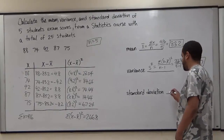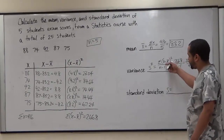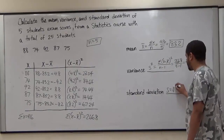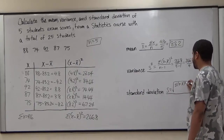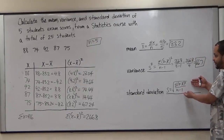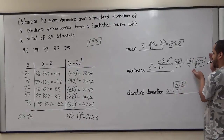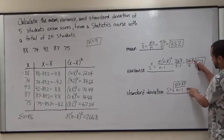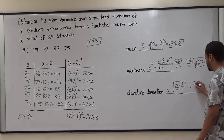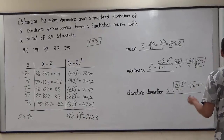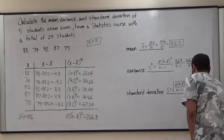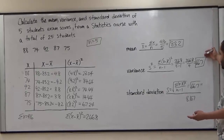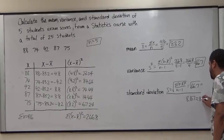For the standard deviation, the notation is just s. The formula is very similar to the variance — the difference is that we place a square root symbol over the entire expression: the square root of the sum of (x minus x-bar) squared divided by n minus 1. Since we already computed the interior, this becomes the square root of 66.7. On the calculator, that gives us 8.167. We round to one decimal place, giving us a standard deviation of 8.2.